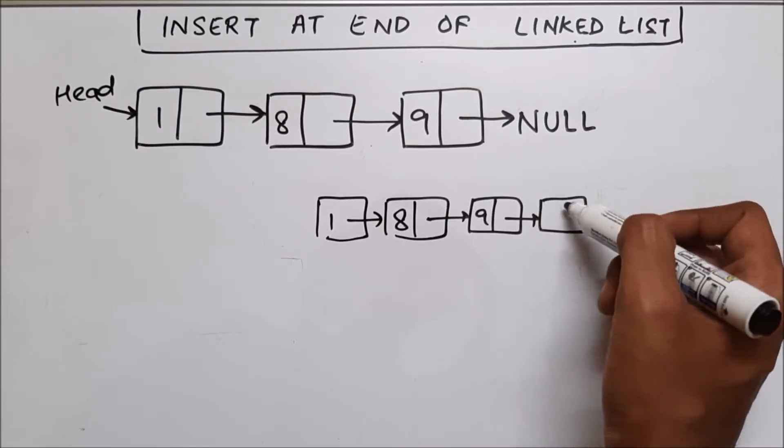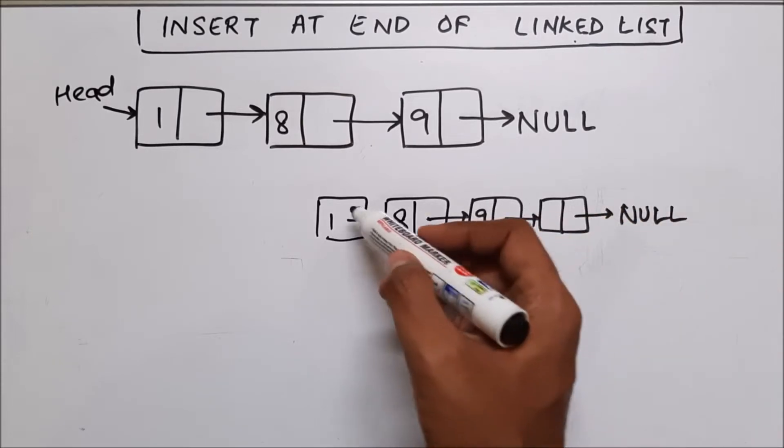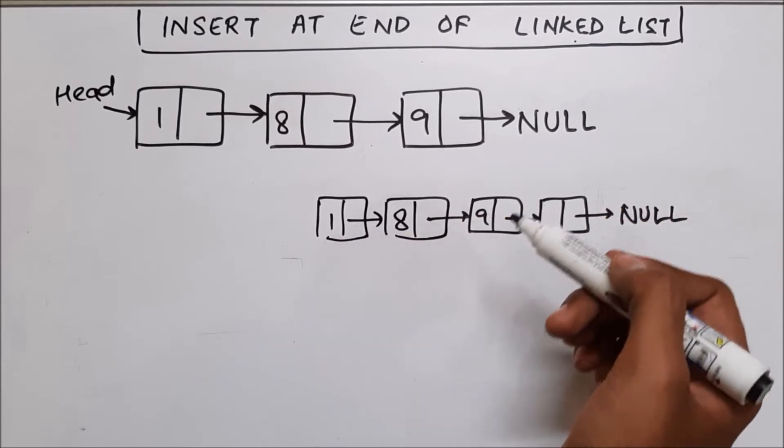This will be the new node which we are adding and this will point to null and this is the required output. So let's see how we can do this.